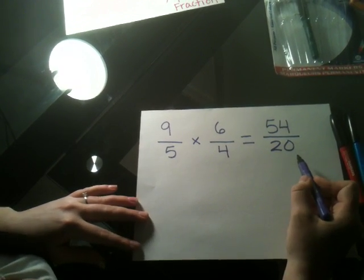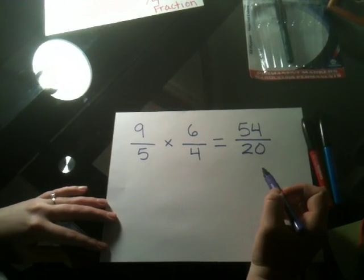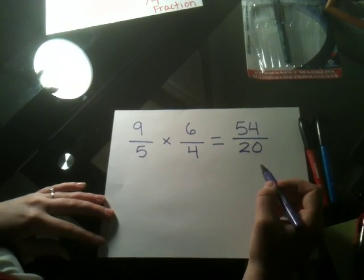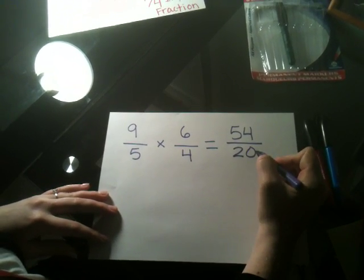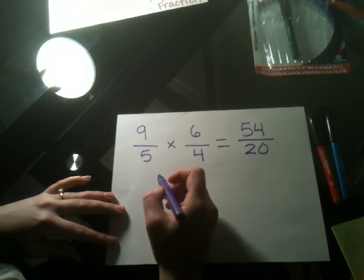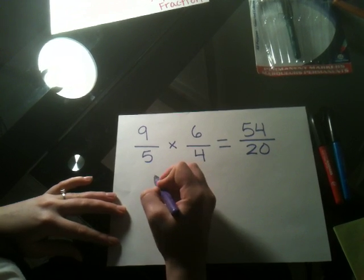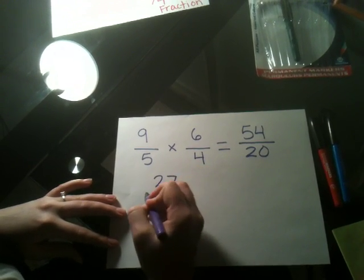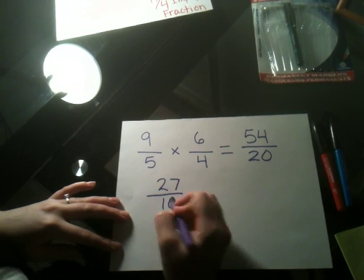With this fraction, we can leave it this way, or in most cases, they ask us to simplify. We see that both of these end in an even number, so we know that we can at least divide both of them by 2. And if we do that, we get 27 over 10.